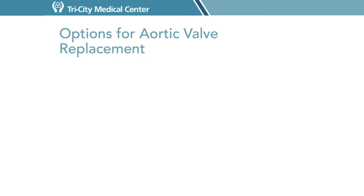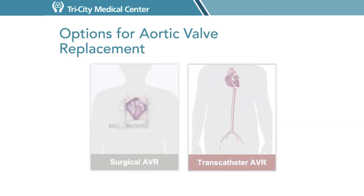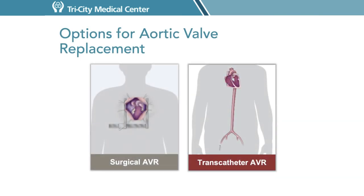What are the options for aortic valve replacement? The main options are surgical aortic valve replacement, which can be performed by open heart surgery or via a minimal incision. There's also a less invasive procedure called TAVR — transcatheter aortic valve replacement — which does not require a heart-lung bypass like open heart surgeries do.